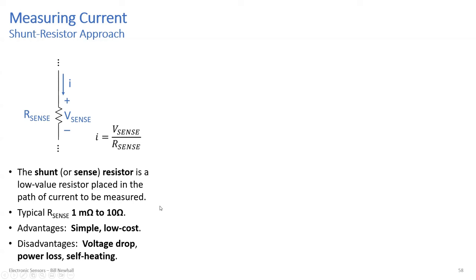The disadvantage is that current going through a resistor causes a voltage drop. If you can tolerate that voltage drop, then it works well. There's also power loss in that resistor, so if you're building a really efficient circuit or have high current, you'll be dissipating some power. There's also self-heating: if you have a high-current path, the resistor could get hot, its resistance might change, and your current measurement could be off.